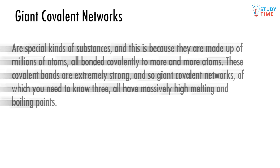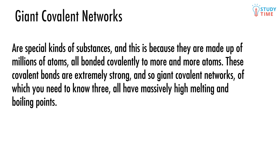Giant covalent networks are special kinds of substances because they are made up of millions of atoms, all bonded covalently to more and more atoms. These covalent bonds are extremely strong, and so giant covalent networks — of which you need to know three — all have massively high melting and boiling points.